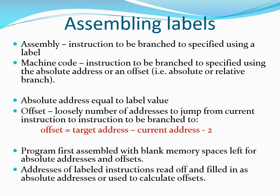We will notice that if our assembly program contains branching instructions, the instructions to be branched to are specified using labels. In machine code, the instructions to be branched to are specified using either absolute address values or offset values, depending on whether the branch is absolute or relative. An absolute address is equal to the address value represented by the label. An offset value can be loosely defined as the number of steps we jump from the current instruction to get to the instruction we intend to branch to. The formula to calculate the offset is: offset = target address − current address − 2.